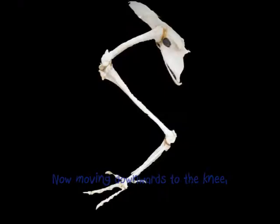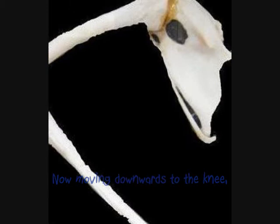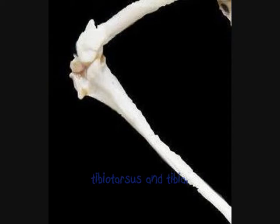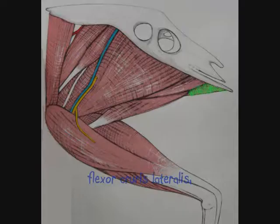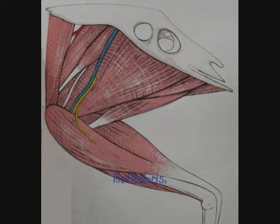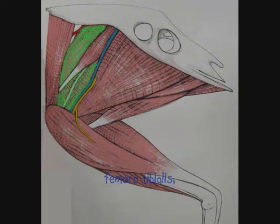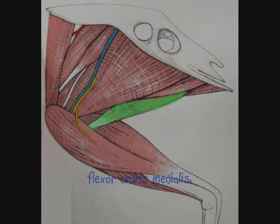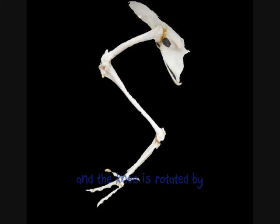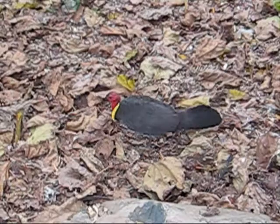Now moving downwards to the knee — the joint between the femur, tibiotarsus, and fibula. Which muscles can we see? Those that flex the knee include ambiens, flexor cruvis lateralis, heliofibularis, and femoral tibialis. Extensors of the knee include femoral tibialis, flexor cruvis medialis, and iliotibialis cranialis. The knee is rotated by parts internal.